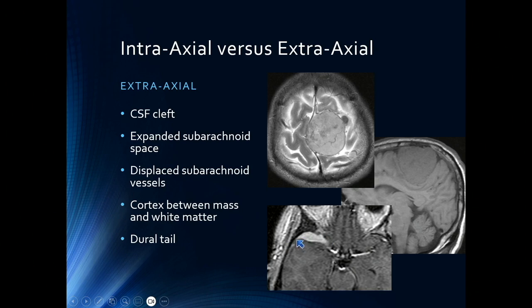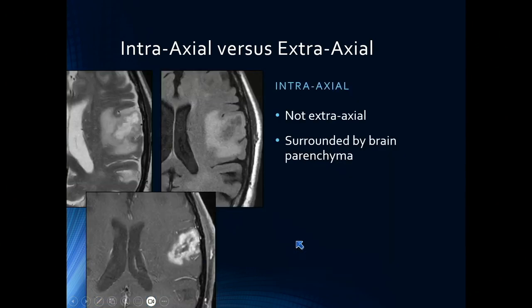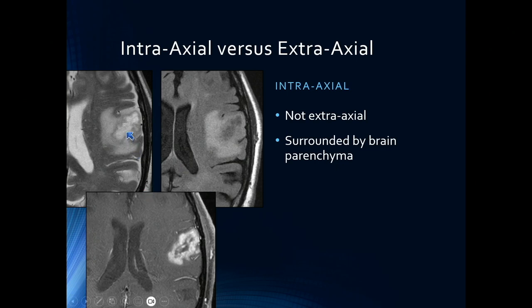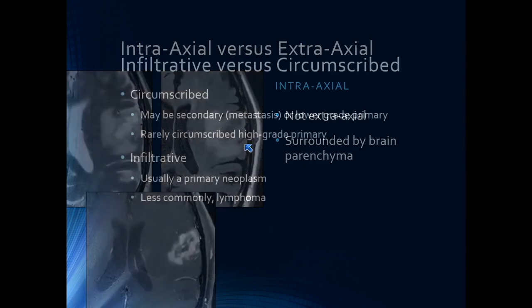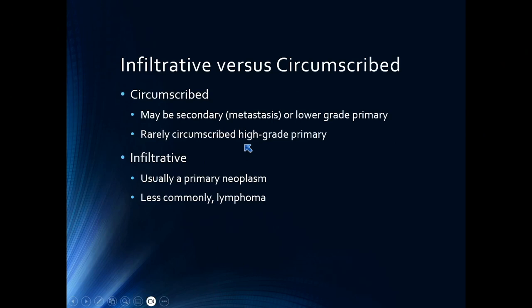So how do you decide if it's intra-axial? Well, the easy answer is it's not extra-axial. We have something that's completely surrounded by the brain parenchyma. In this particular case of a glioblastoma, what you see is this infiltrative irregular mass lesion, and there's brain parenchyma all the way around. Here you can actually see that the cortex is involved and peripheral to the lesion itself, so it has to be inside the brain parenchyma. It is not extra-axial — it has none of those features we talked about.